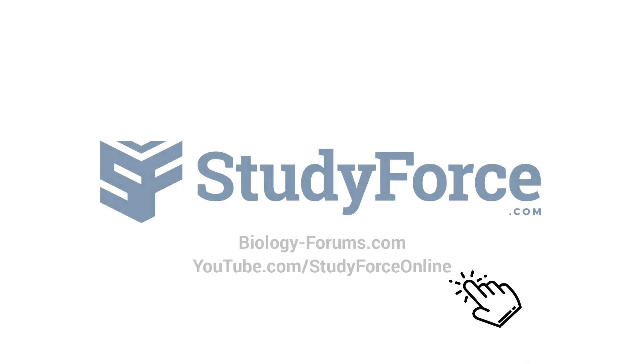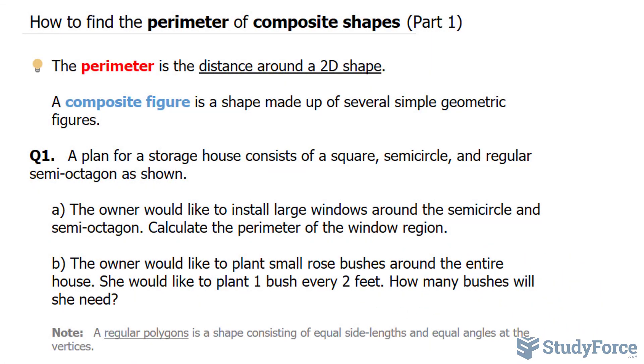In this two-part series, I'll show you how to find the perimeter of composite shapes. Let's begin with a quick understanding of what perimeter and composite figures are. The perimeter is the distance around a shape, and a composite figure is a shape made up of several simple geometric figures.